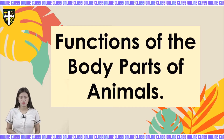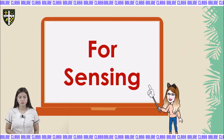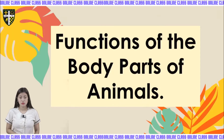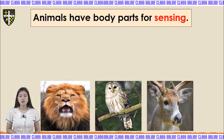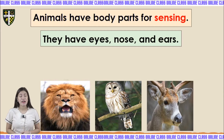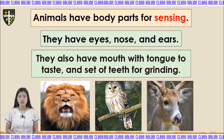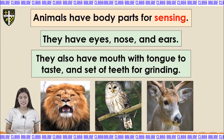Let's talk about the functions of the body parts of animals. Like people, animals have body parts for particular uses too. The first one is for sensing. Animals have body parts for sensing — we have eyes, nose, ears, and also a mouth with a tongue to taste, and a set of teeth for grinding.